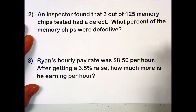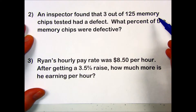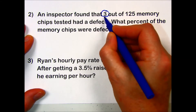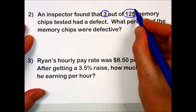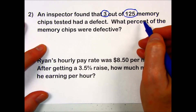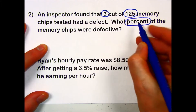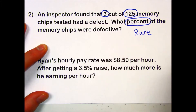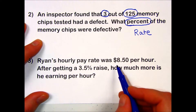Problem number two: an inspector found that three out of 25 memory chips tested had a defect. What percent of the memory chips were defective? We have three, which is the part, out of 25, which would be our base, and we are supposed to find the percent — that's our unknown, and it's the rate.